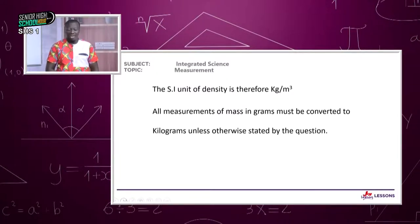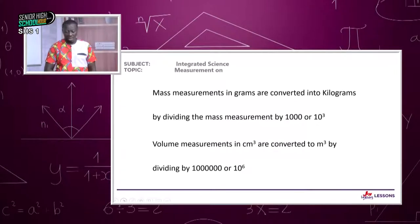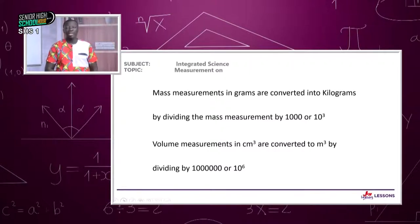The SI unit of density is therefore kilograms per meter cube. All measurements of mass in grams must be converted to kilograms unless otherwise stated. You convert mass by dividing by 1,000, or 10 to the power 3.